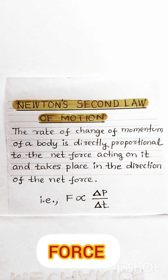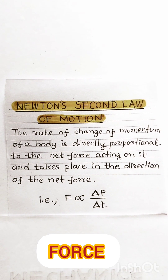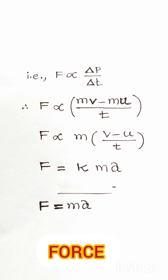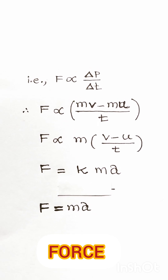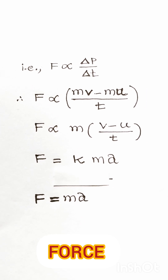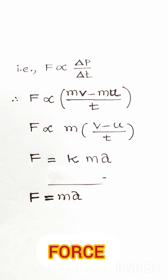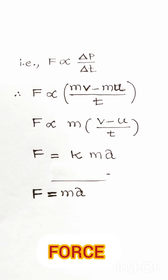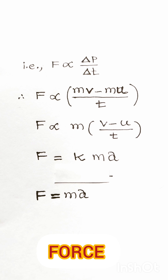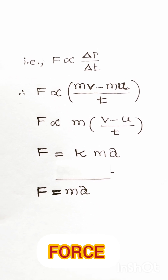That is, F is proportional to ΔP/Δt, where ΔP indicates change of momentum and Δt indicates change of time. ΔP indicates mv minus mu, where mv indicates final momentum and mu indicates initial momentum, and Δt is the time duration. When you take m out from the bracket, we can get F is proportional to m into (v minus u) by t. Since (v minus u)/t indicates acceleration of the moving body under the action of external force F, acceleration is represented as a = (v minus u)/t.